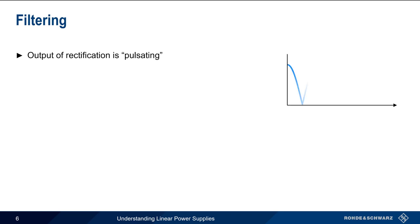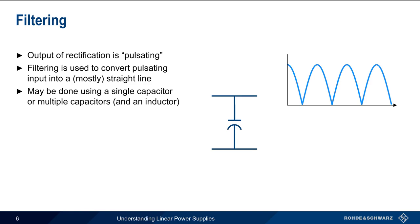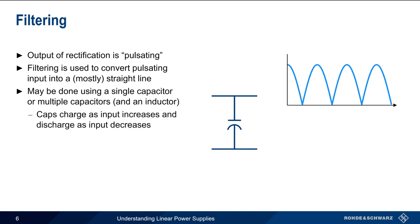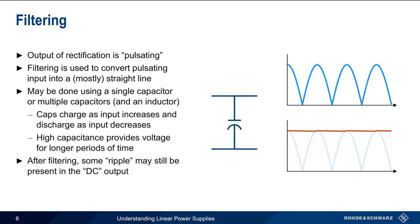The output of a rectifier is a pulsing or pulsating voltage, so filtering is used to convert this pulsating input into a mostly straight line. This filtering is done using one or more capacitors, sometimes in combination with an inductor. Capacitors charge as input voltage increases and discharge when voltage decreases, so they can fill in the voltage between the peaks of the pulsating waveform. The larger the capacitor, the longer the period of time over which it can provide this smoothing voltage. Note however that even after filtering, some amount of ripple may still be present on the nominally DC output.